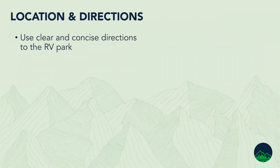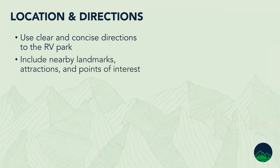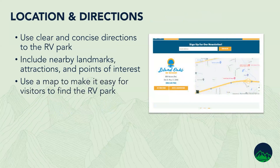Make sure you've got clear and concise directions to the park, including landmarks, attractions, and points of interest. Use a map to make it easy for visitors to find the park — most sites have the ability to put your address in and pull up a Google map. Maps are a big deal for most RV parks — you guys have them printed out and you should have a digital version you can use as well, specific to your park.